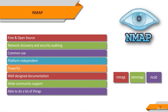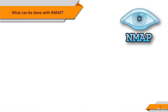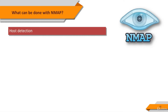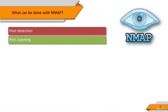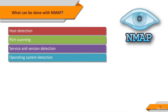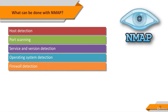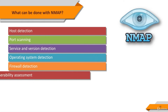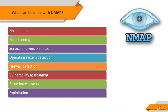The NMAP suite also includes a flexible data transfer, redirection, and debugging tool, NCAT; a utility for comparing scan results, NDIFF; and a packet generation and response analysis tool, Nping. NMAP uses raw IP packets in novel ways to determine what hosts are available on the network, which ports are accessible, what services those hosts are offering, what operating systems are running, what type of packet filters or firewalls are in use, and dozens of other characteristics. Beyond all this, NMAP has its own scripting engine and allows developers to develop new modules.